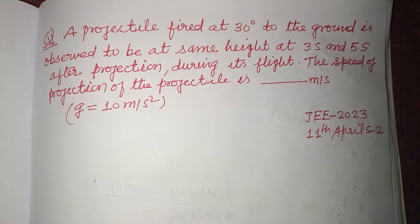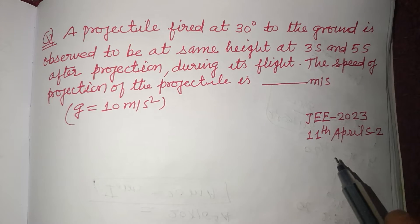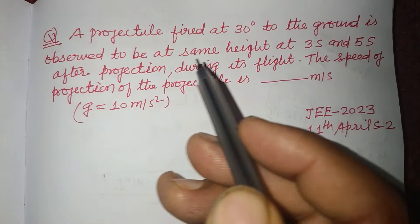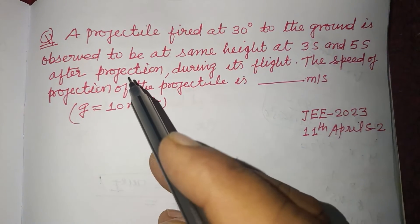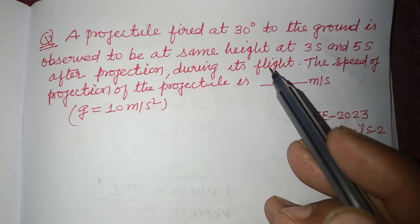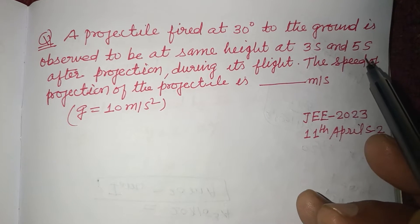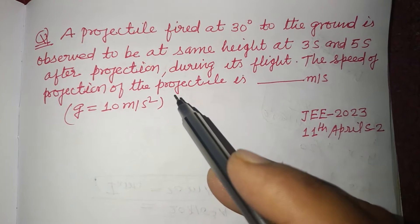Hello viewers, welcome to this YouTube channel. This is a question from JEE 2023. A projectile fired at 30 degrees to the ground is observed to be at the same height at 3 seconds and 5 seconds after projection. During its flight, the speed of projection of the projectile is?